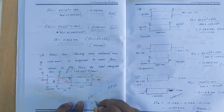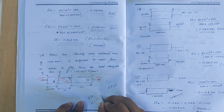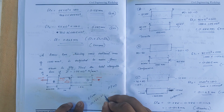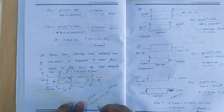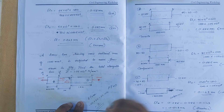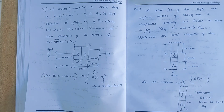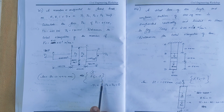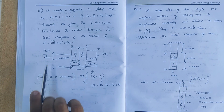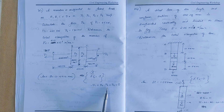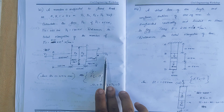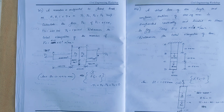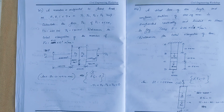Using the principle of equilibrium, sigma Fx equals 0: minus P1 plus P2 minus P3 plus P4 equals 0. This is the principle used to find P2.